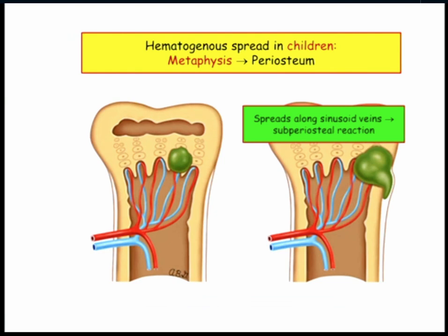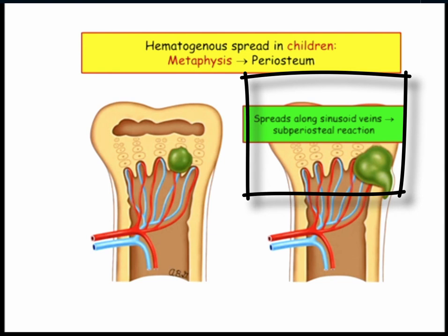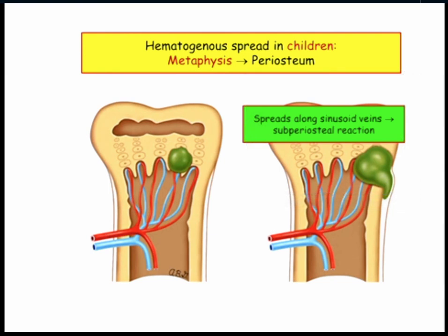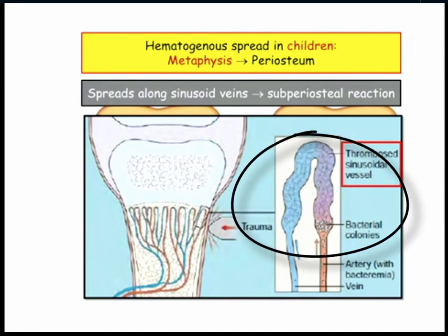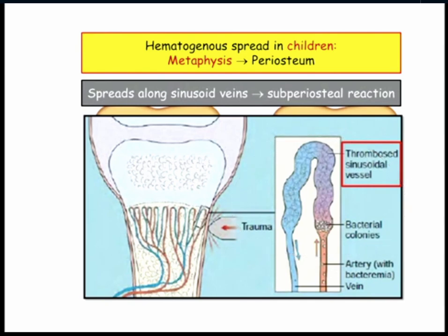Hematogenous spread in kids goes to the metaphysis because the organism spreads hematogenously along the sinusoids. Because they have the epiphyseal growth plate, the articular surface does not communicate with the medullary canal. In adults, we don't really have the growth plate, so the metaphysis communicates with the medullary canal up to the growth plate. Because the infection gets trapped there and doesn't get into the joint or to the articular surface, it tends to form sinus tracts — basically a fistula out to the skin. Bacteria entering via the artery lead to thrombosis of sinusoidal veins, predisposing to bone necrosis.